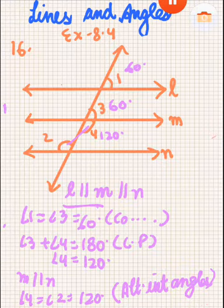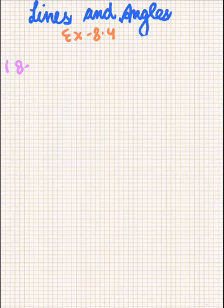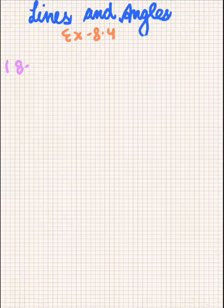Question 17 is the same as question number 9, which we have already discussed in the previous video, so you can watch that for that question. Now question 18: the opposite sides of a quadrilateral are parallel. If one angle of the quadrilateral is 60 degrees, find the other angles.